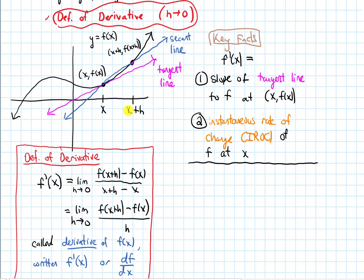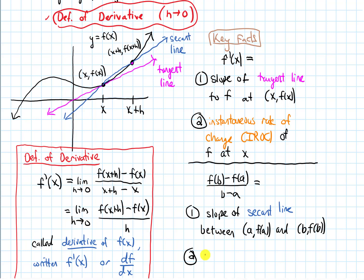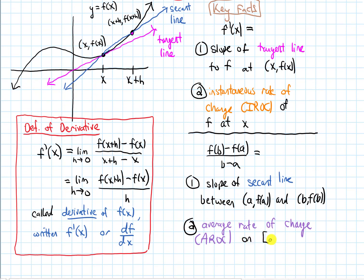The slope of the secant line in general has the form f of b minus f of a over b minus a, if I was looking at the interval from a to b. This represents the slope of the secant line between the points a comma f of a and b comma f of b. The other thing the slope of the secant line represents is the average rate of change, sometimes abbreviated AROC, on the interval from a to b.